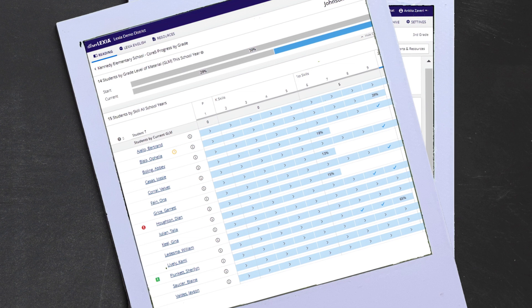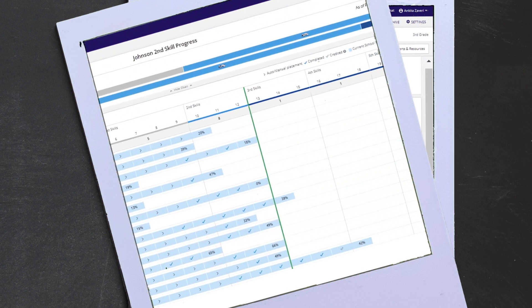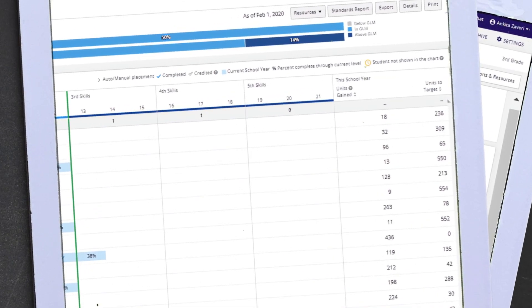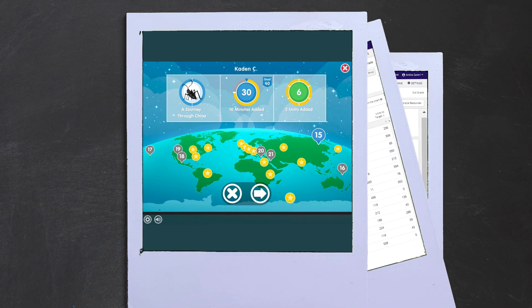The data I receive daily from Core 5 has been the biggest game-changer. I can see which students need targeted prescriptive intervention, and which students are ready to move on.